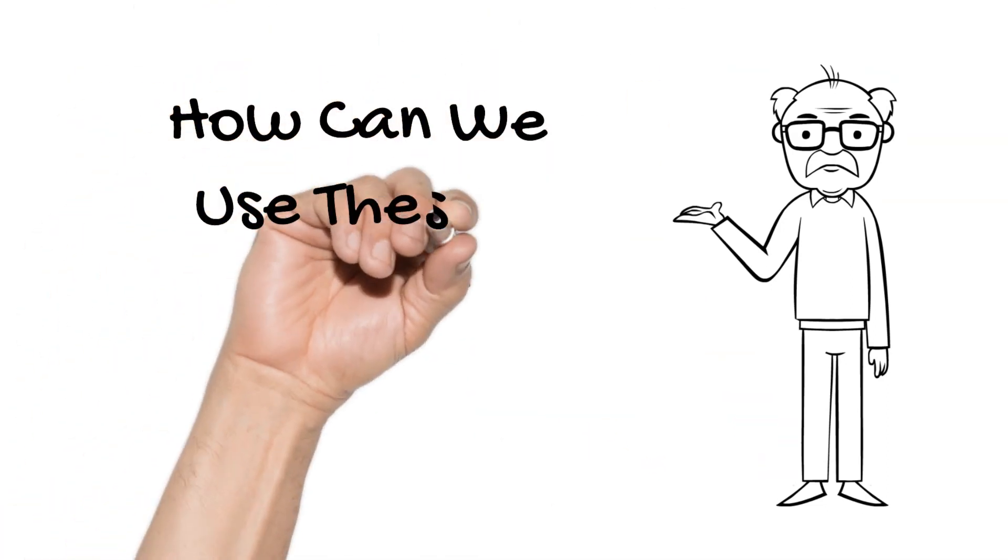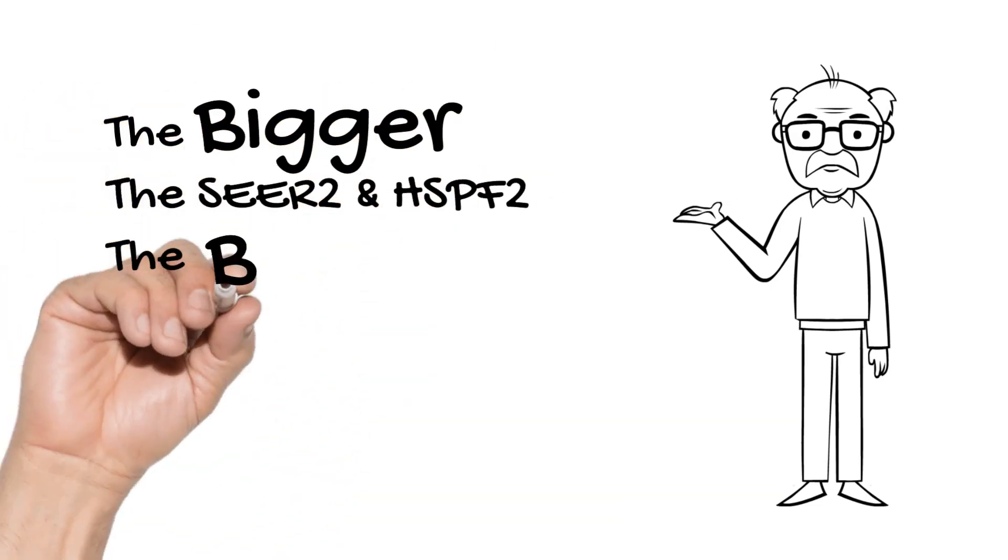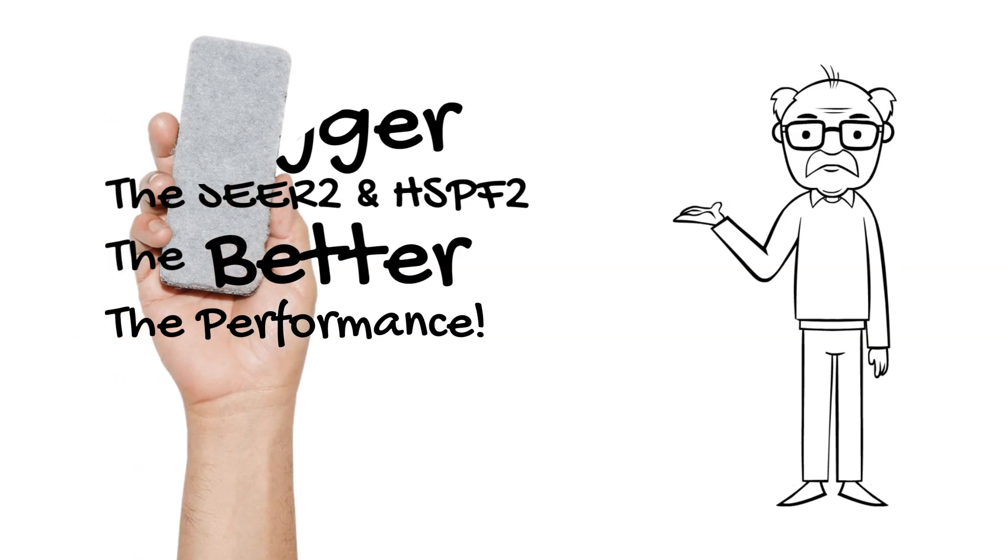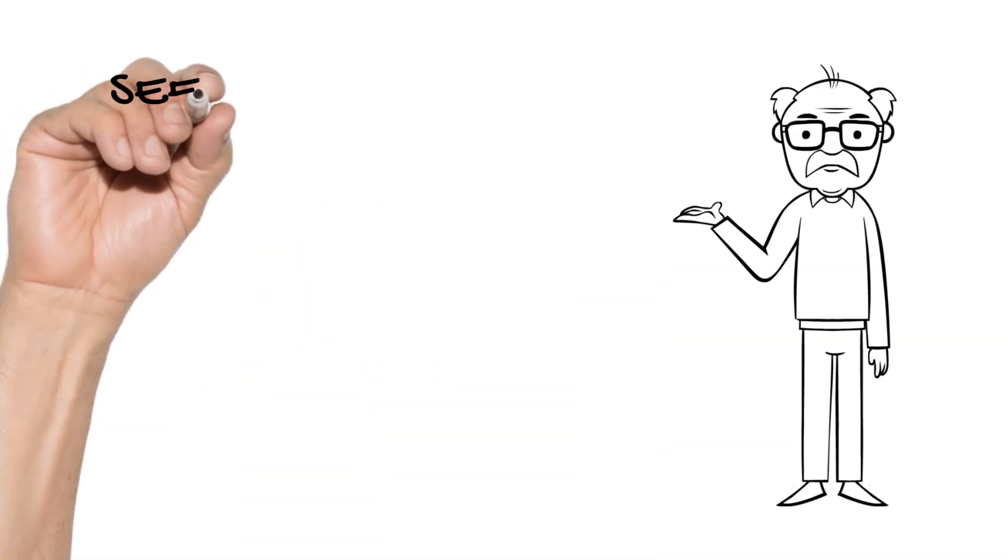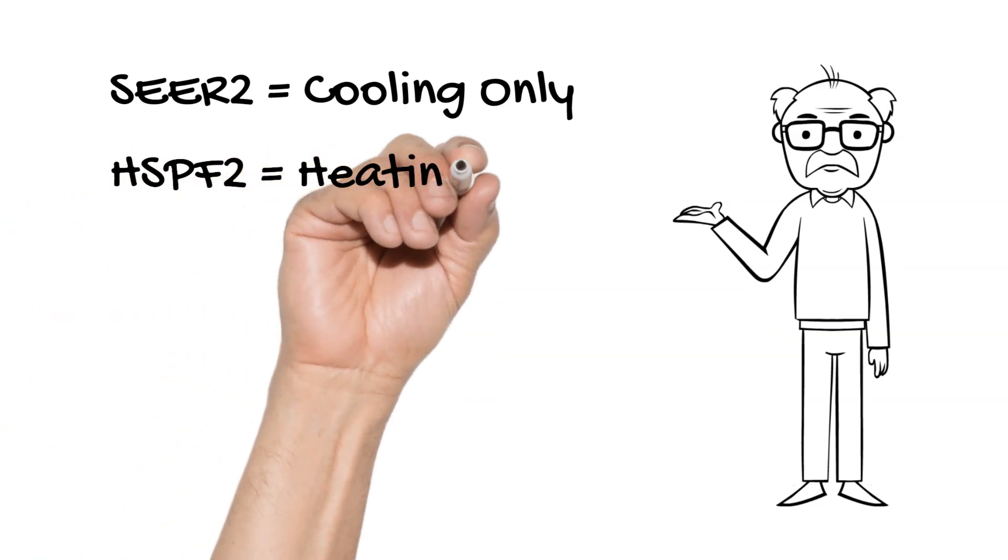How can you use these numbers? Like miles per gallon, the bigger the number, the better the performance. SEER2 numbers are cooling efficiency only. HSPF numbers are heating numbers.